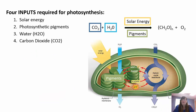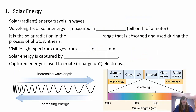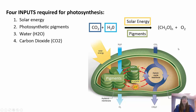There are four inputs necessary for photosynthesis: solar energy, photosynthetic pigments, water, and carbon dioxide. As you can see in the picture, the thylakoid membranes are stacked up in the grana — that's where the first part happens. The second half of photosynthesis, the Calvin cycle or dark reactions, happens in the stroma.